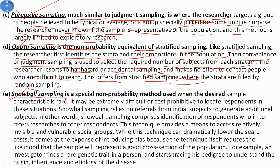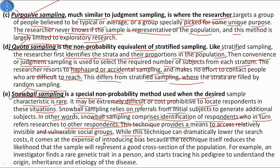Snowball sampling is a special non-probability method used when the desired sample characteristics are rare. It may be extremely difficult or cost-prohibitive to locate respondents, so snowball sampling relies on referrals from initial subjects to generate additional subjects. It comprises identification of respondents who in turn refer researchers to other respondents. This technique provides a means to access relatively invisible or vulnerable social groups. However, it introduces bias because it reduces the likelihood the sample will represent a good cross-section of the population. For example, an investigator finds a rare genetic trait in a person and starts tracing their pedigree to understand the origin, inheritance, and etiology of the disease.